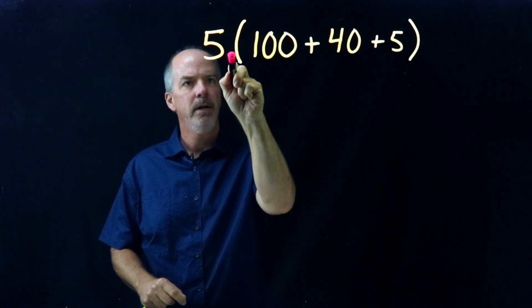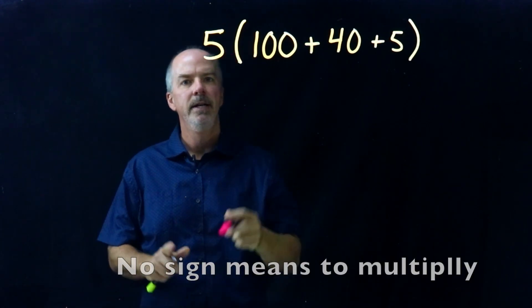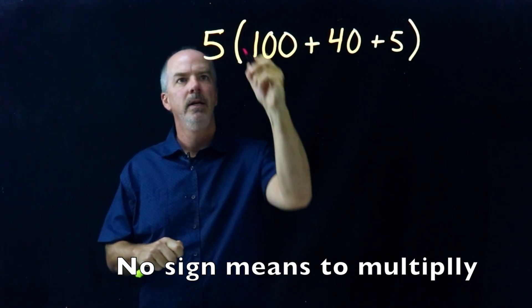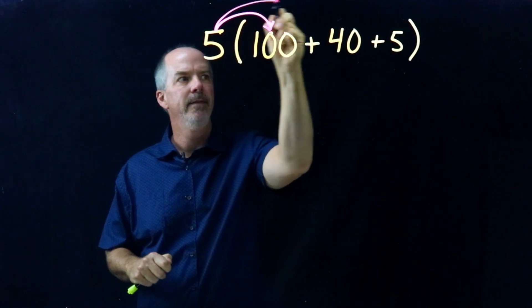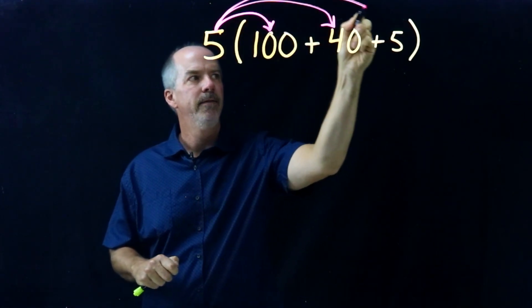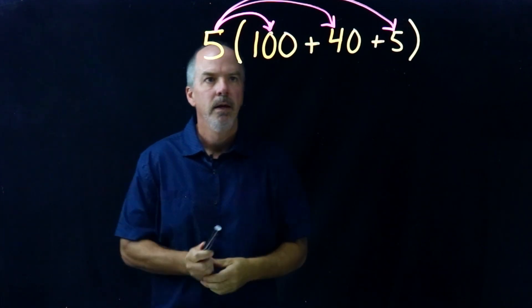Now again, look here. As we mentioned earlier, if there's no sign outside the parentheses, that means to multiply. So again, we're using the Distributive Property. Five times one hundred, five times forty, and five times five.